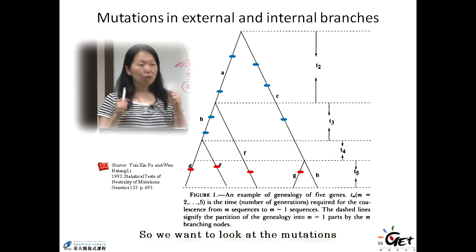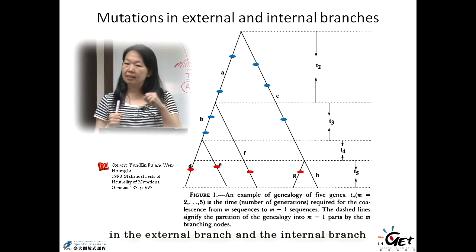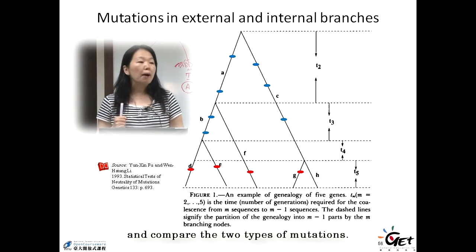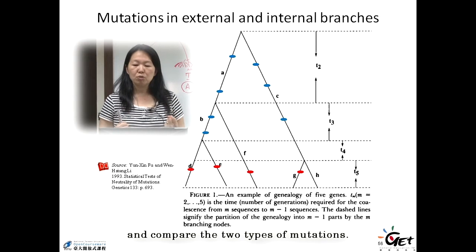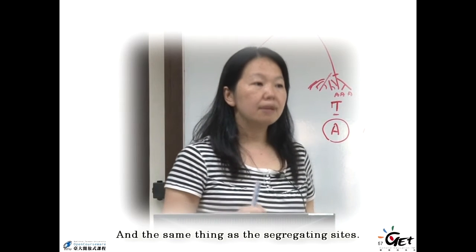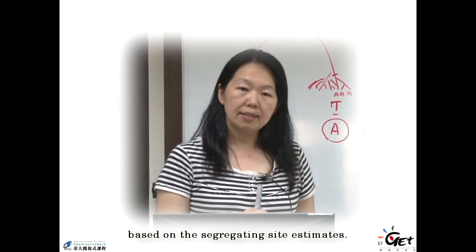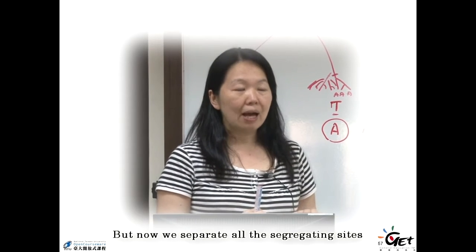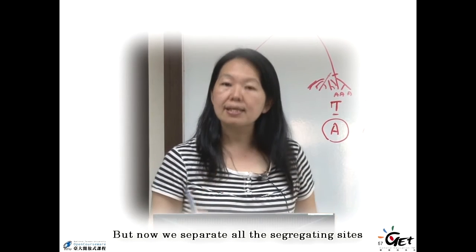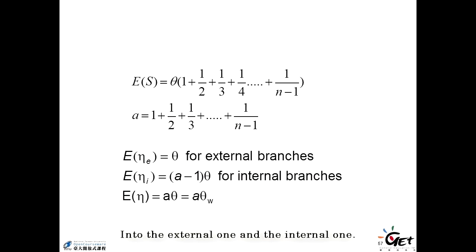So we want to look at the mutations in the external branch and the internal branch and compare the two types of mutations. And the same thing as the segregating site. So actually we use the estimates based on the segregating site estimates. But now we separate all the segregating sites into the two categories, into the external one and internal one. So that's the two estimates.